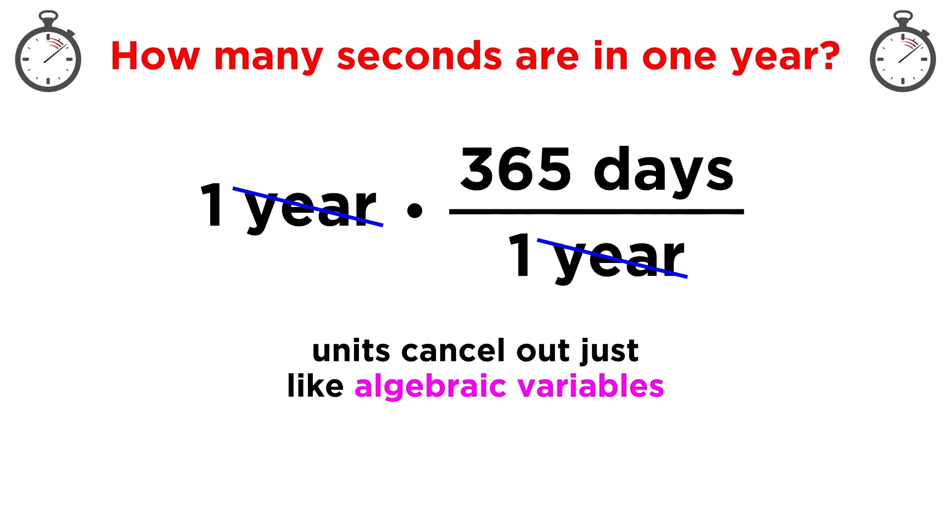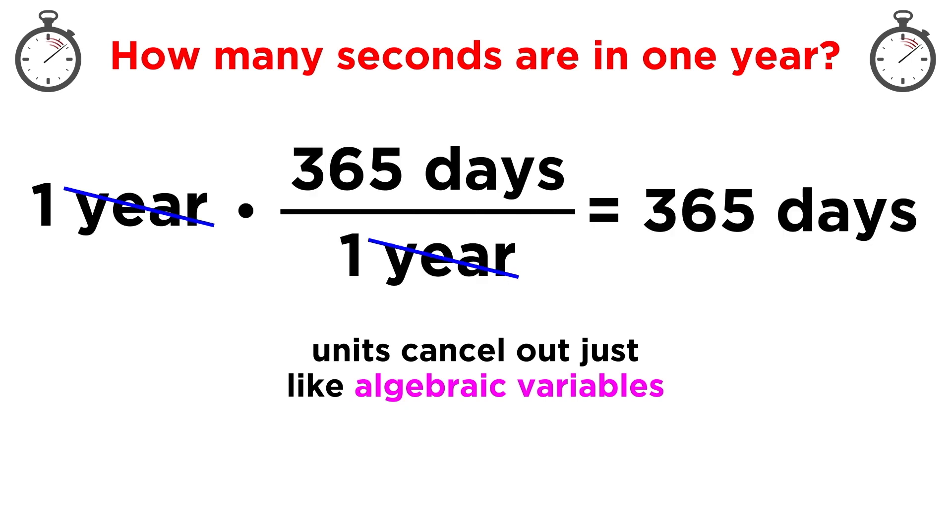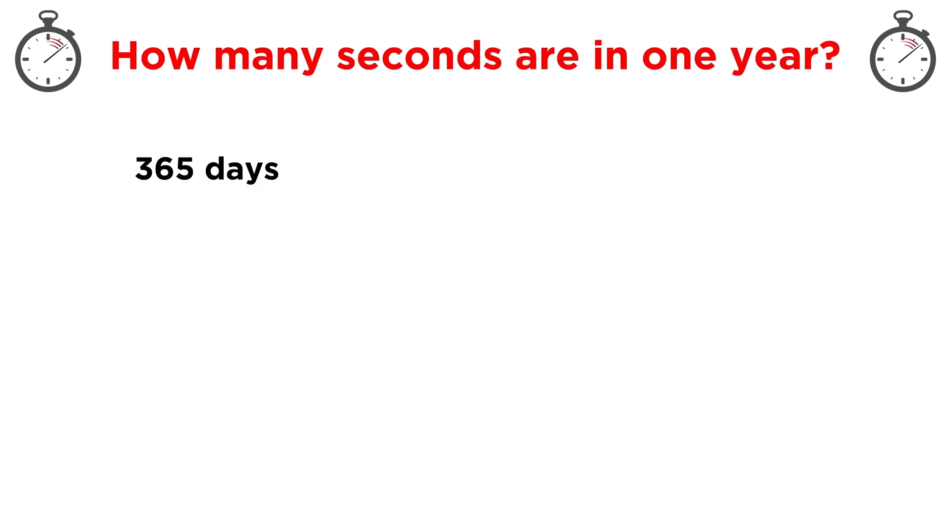But if we multiply one year by this fraction, we can see that the units themselves cancel out, just like an algebraic variable, and we will be left with 365 days. Let's continue with conversion factors just like this, but use ones that convert this value into hours, then minutes, and then seconds.